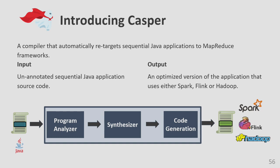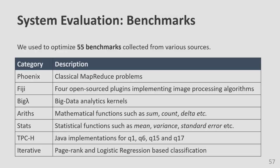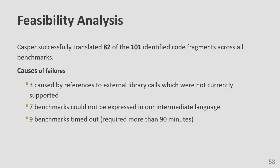We implemented these ideas in Casper. Casper takes unannotated sequential Java code and generates code in three MapReduce frameworks: Spark, Hadoop, and Flink. For evaluation, we accumulated about 55 benchmarks from prior works and open-source implementations, including common statistical and mathematical functions and popular big data workloads. About 100 code fragments were found doing data processing, and from those 100, Casper translated about 82 completely automatically. The ones that failed were either taking too long to search or the API was not expressive enough.